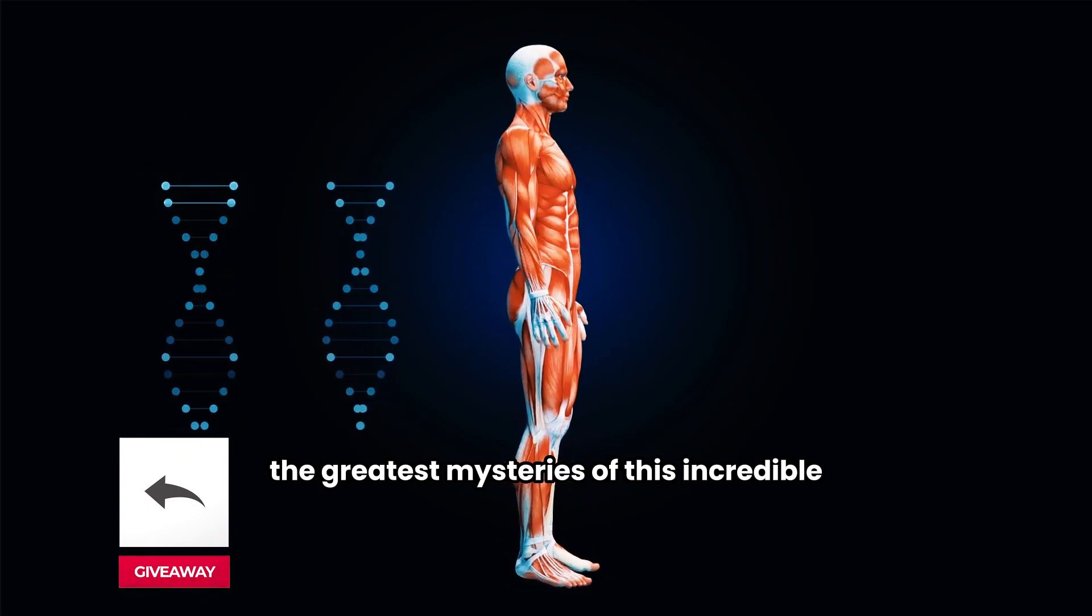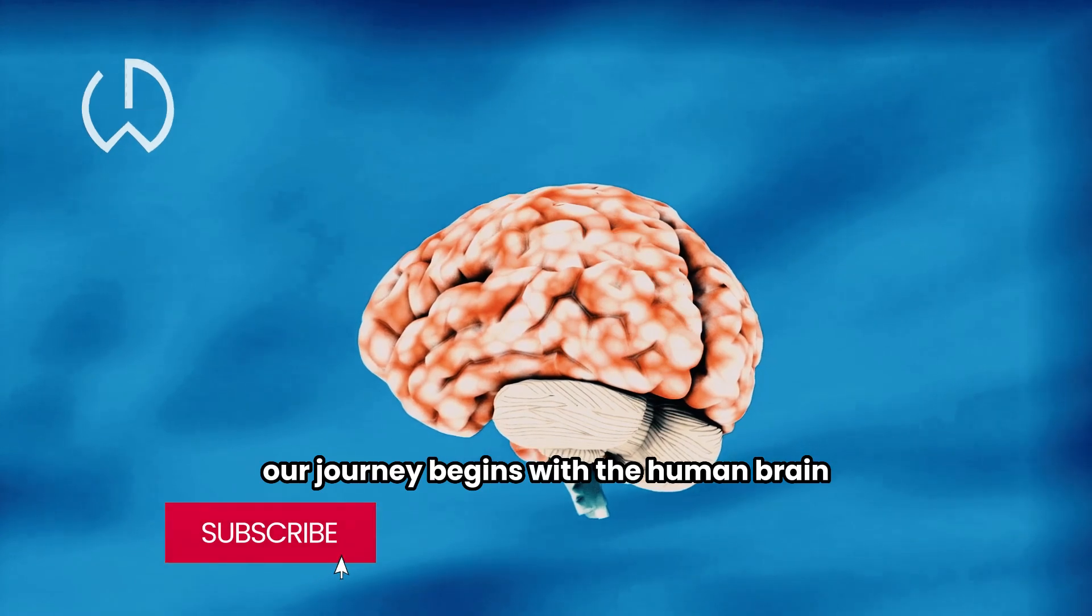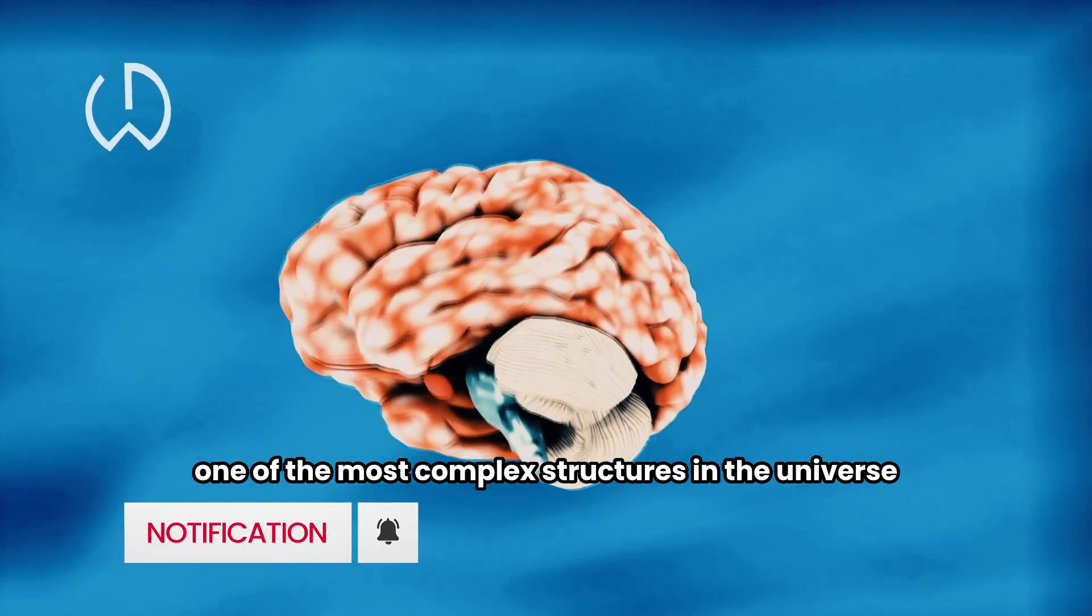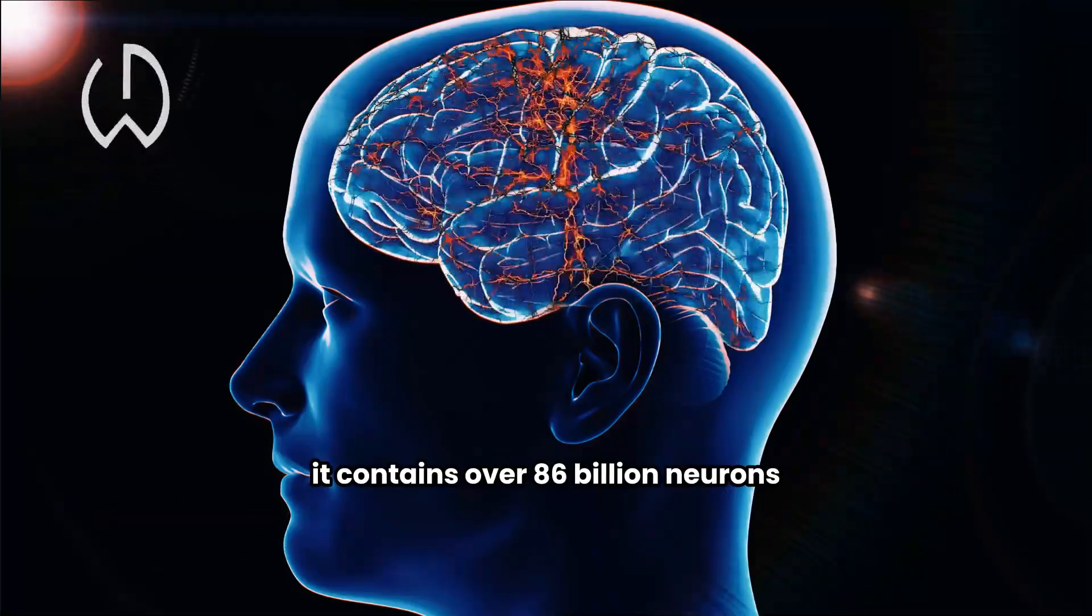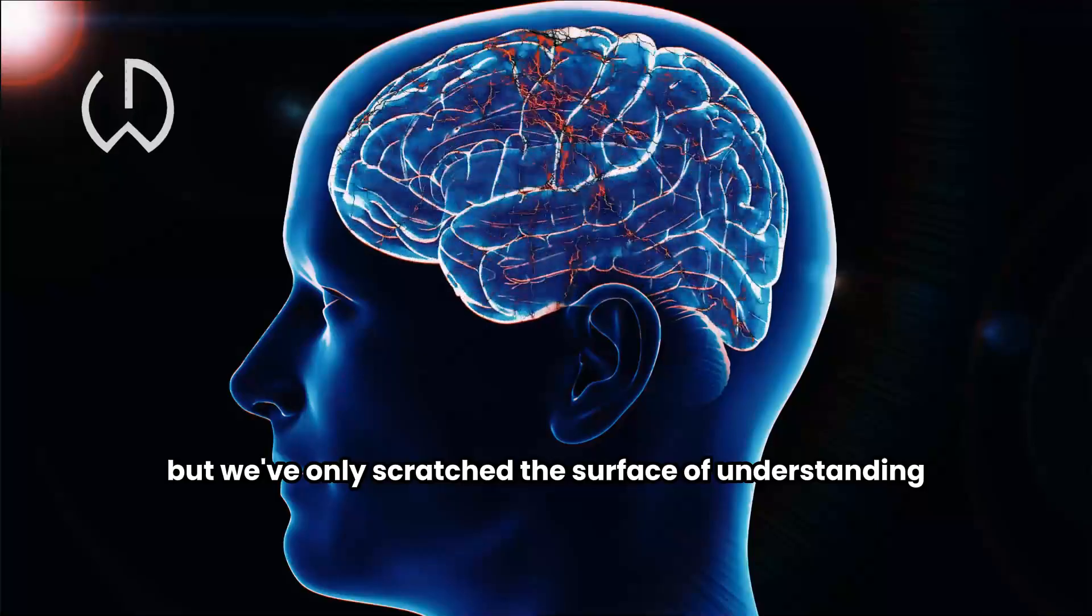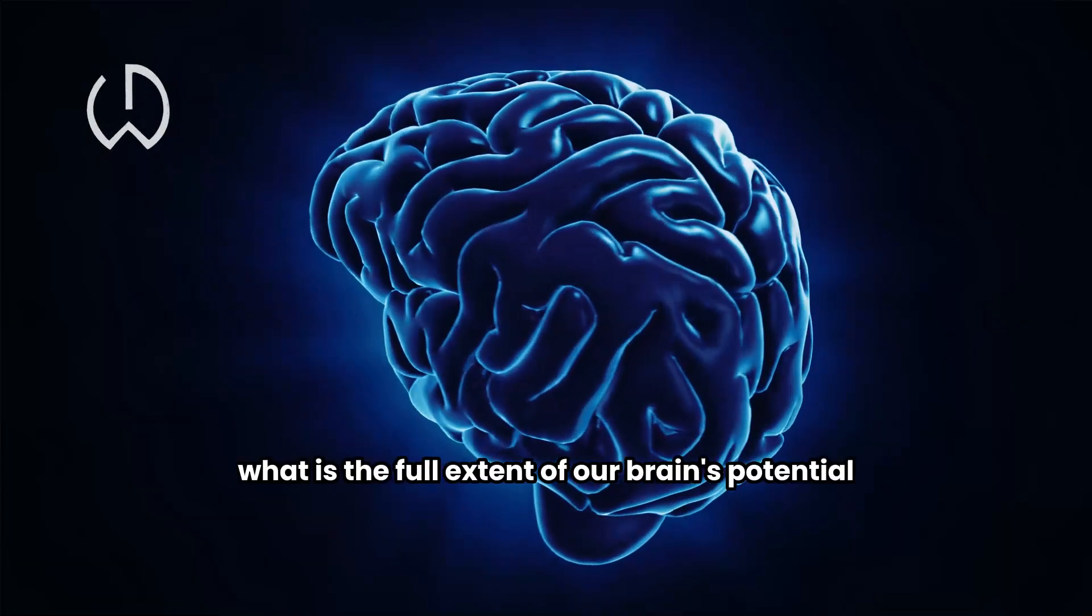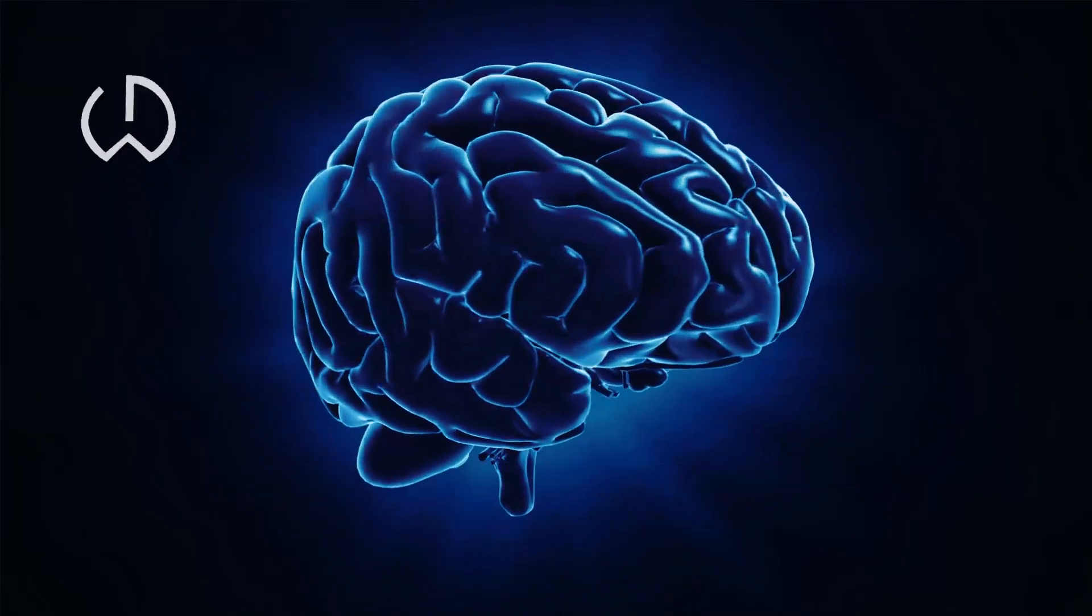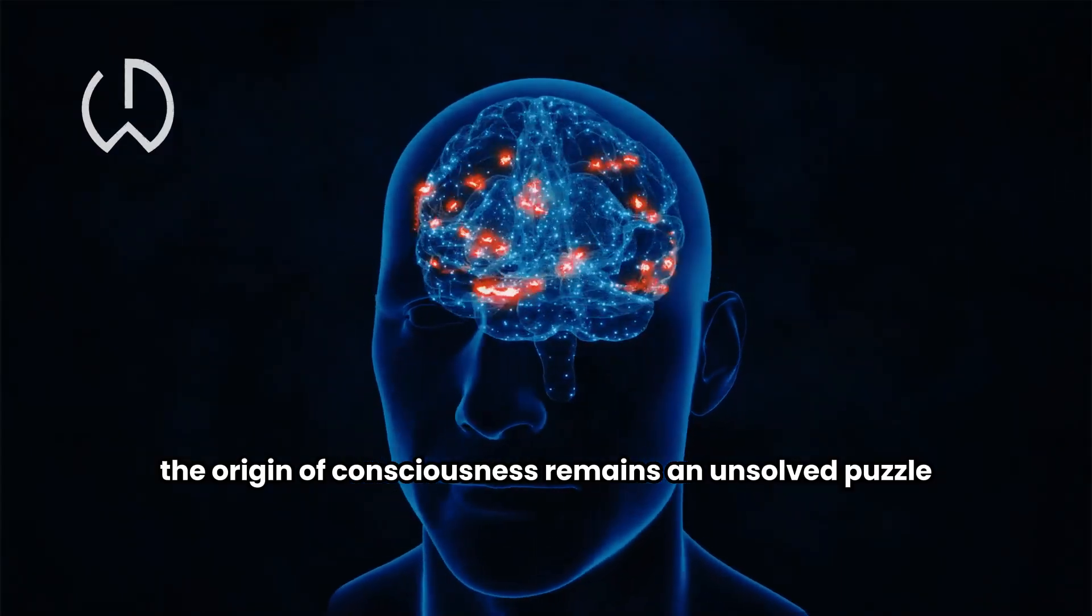the greatest mysteries of this incredible biological marvel. Our journey begins with the human brain, one of the most complex structures in the universe. It contains over 86 billion neurons, but we've only scratched the surface of understanding how it works. What is the full extent of our brain's potential, and can we unlock hidden abilities? The origin of consciousness remains an unsolved puzzle.